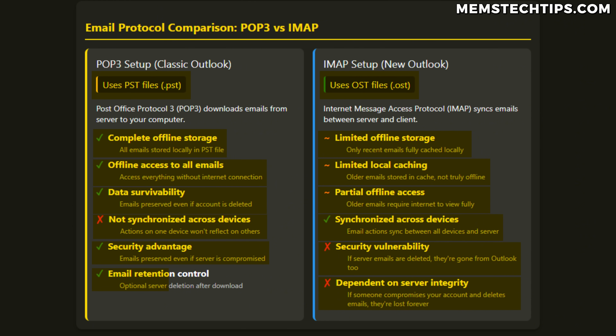In a POP3 setup, you can also choose to automatically delete emails from the server after a certain number of days, and when they're deleted from the deleted items in Outlook. An IMAP setup means the mail client and the mail server are a mirror image of each other, constantly syncing changes. While IMAP is the new standard used these days, it often feels slow and just doesn't work as well for some people when compared to a POP3 setup.